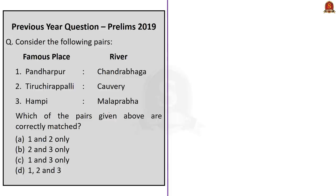Moving on to the next question, also asked in 2019: 'Consider the following pairs — famous places on the left and rivers on the right. First pair: Pandharpur – Chandrabhaga. Second pair: Tiruchirapalli – Kaveri. Third pair: Hampi – Malaprabha. Choose the correctly matched pairs.' Option A: 1 and 2 only. Option B: 2 and 3 only. Option C: 1 and 3 only. Option D: 1, 2, and 3.